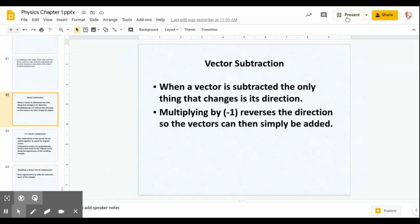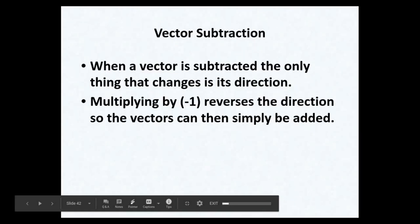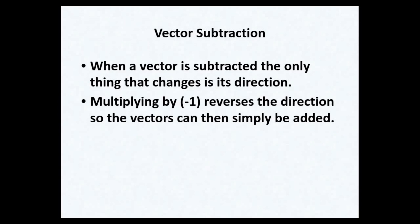Now we'll look at vector subtraction. When subtracting vectors, you simply multiply the vector being subtracted by negative one, or turn it in the opposite direction. So instead of a vector going east, you would add it as if it were going west.